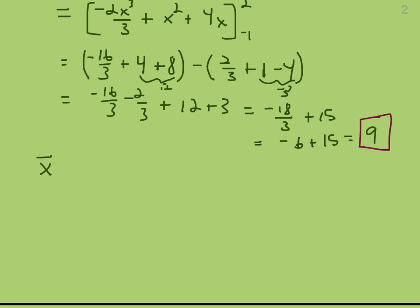x-bar is found by integrating the reciprocal of area. The formula is that we multiply x times that same f minus g: negative x squared plus 2x plus 1 minus g, which is x squared minus 3, from negative 1 to 2.